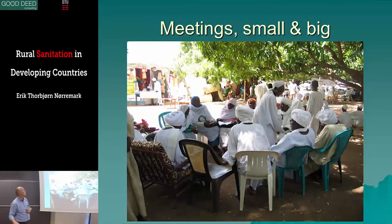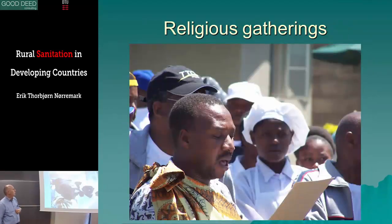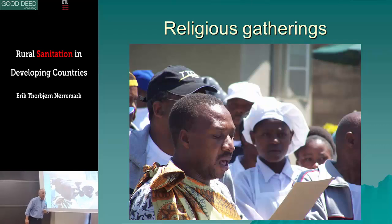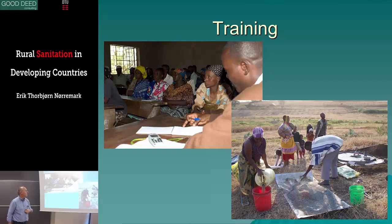Meetings can be small or big. Here we find a place with shade, sit down, and talk with a group of invited stakeholders. Or we can have a gathering — this was at a school where they do some dancing and then some talk as well. You can have a religious or community leader explaining something. You can have classroom training or training in the field — this is from Likamba, where we are training women to build latrines, the female latrine builders. Those are my favorite working partners.